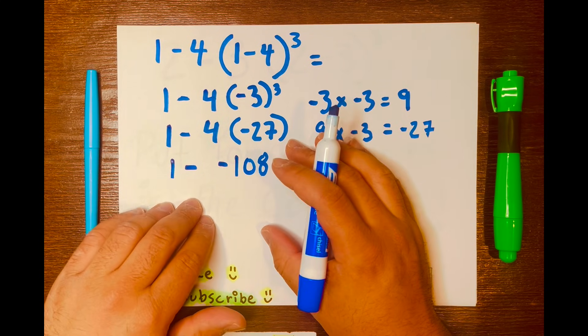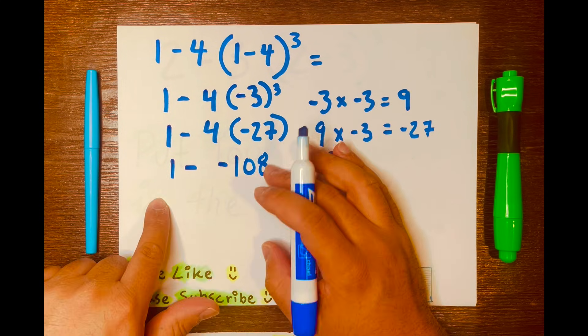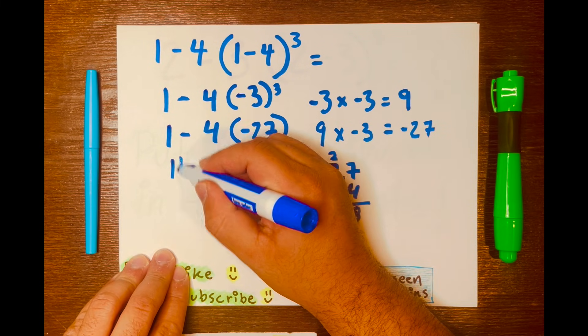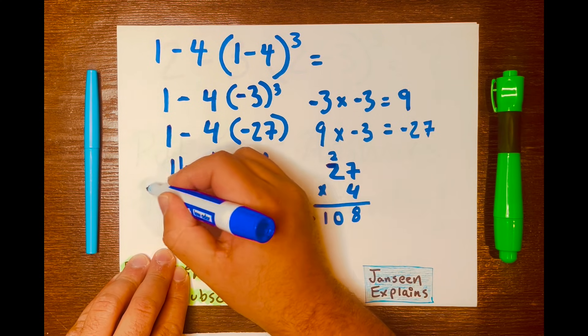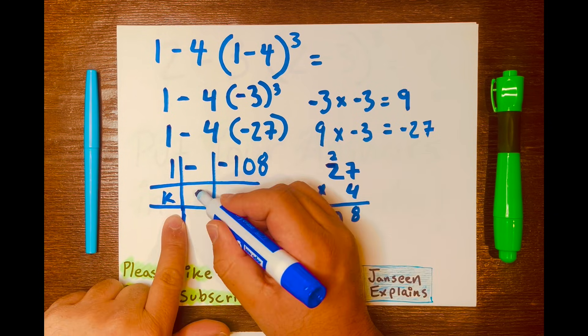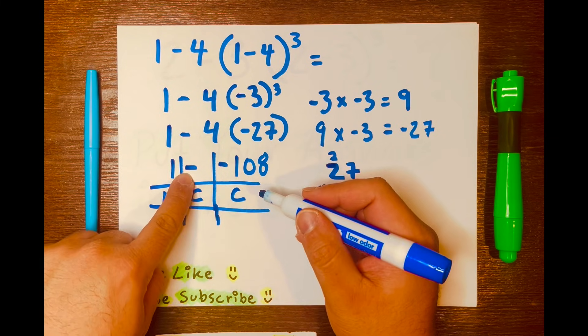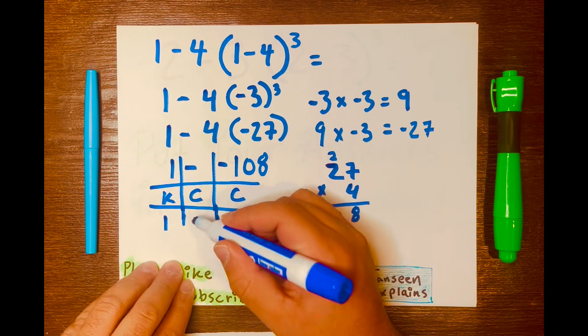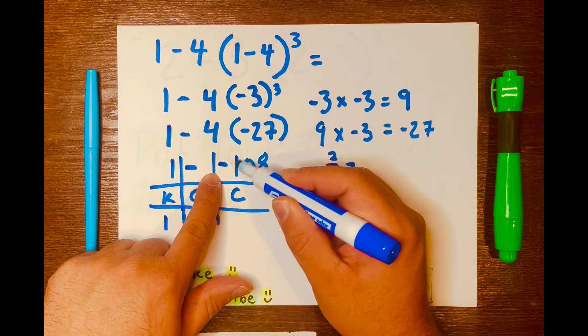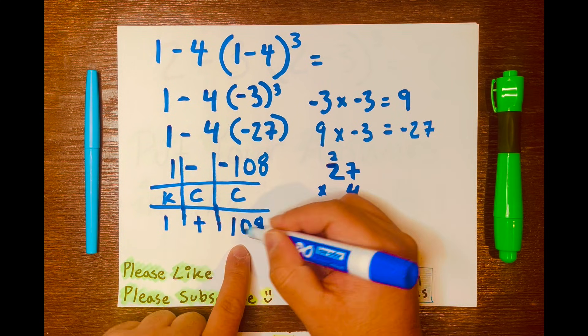And then anytime you are subtracting integers, which these numbers are integers, you can use a method called keep change flip. And I'll draw a table to organize my numbers. K will go here for keep, C for change, and F for flip. So we'll keep the 1, we'll change the subtraction to addition, and lastly we'll change this number, negative 108, to its opposite. So it'll be positive 108.